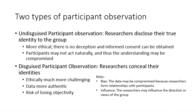There are two types of participant observation. Undisguised participant observation, in which researchers disclose their identity to the group, is more ethical — there's no deception and informed consent can be attained. But participants might not act naturally and might hide things from you. Disguised participant observation, in which researchers conceal their identities, has more ethical problems but the data are more authentic. There is a risk the researcher might lose objectivity and get caught up in the group themselves, and the data might be compromised by relationships formed with participants. Also, the researcher's influence could affect what happens in the group.